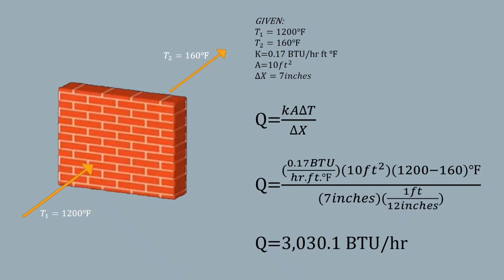The change in x is 7 inches. So here's our formula for this problem: Q equals k times area times change in temperature over the change in Δx. So we just substitute the value here.